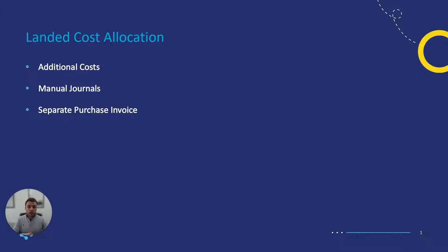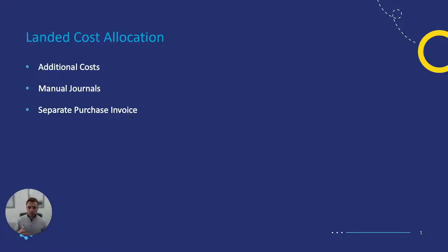There are three ways to manage landed costs in Deere, as you can see on the screen here. The first is using the additional cost feature. Additional costs is the second box below the actual order itself on a purchase order, and you would use this section for any additional costs you have incurred from that supplier — such as freight, insurance, packing, or any other costs.